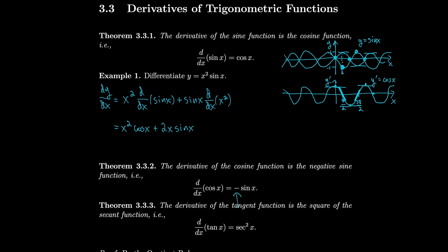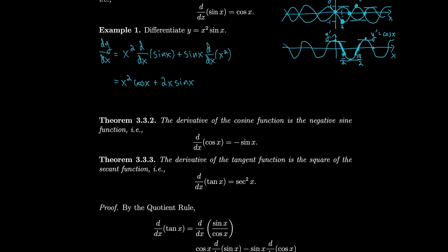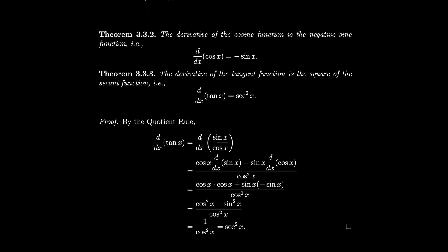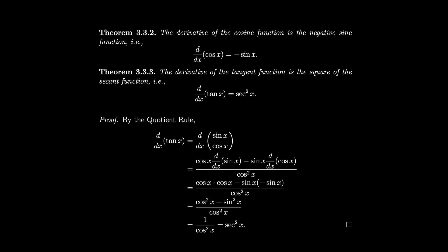That's a very crucial minus. The derivative of the tangent function is the square of the secant function — derivative of tangent is secant squared. We can prove this with the quotient rule. Tangent is sine over cosine, so using the quotient rule: cosine times derivative of sine, minus sine times derivative of cosine, all over cosine squared. The derivative of sine is cosine, giving cosine squared, and the derivative of cosine is minus sine, giving plus sine squared. So we get cosine squared plus sine squared on top, which equals 1, and 1 over cosine squared is secant squared.